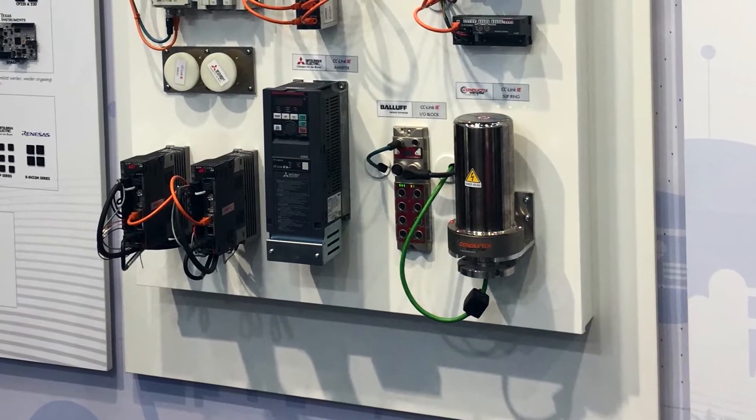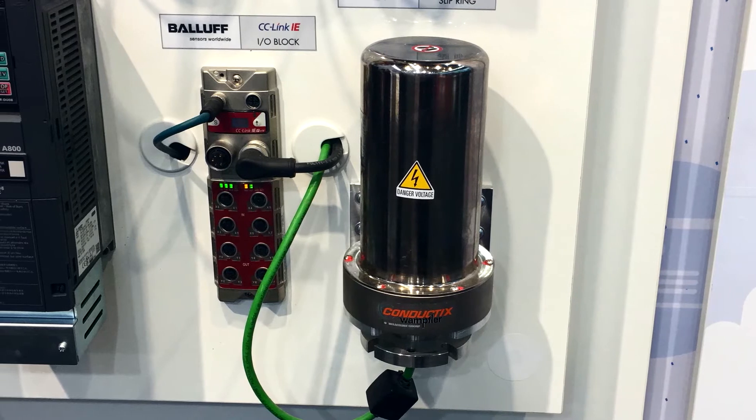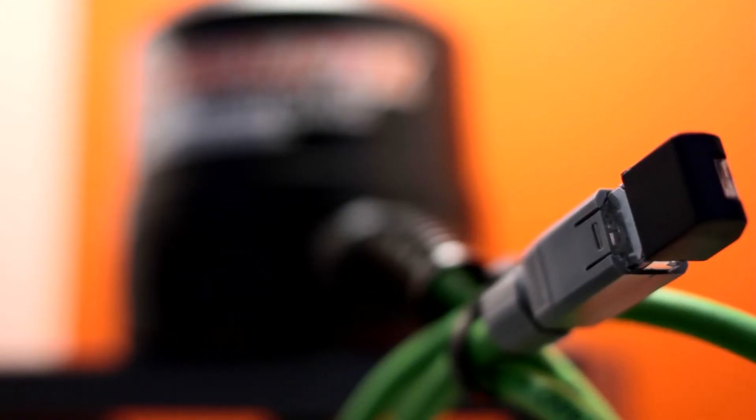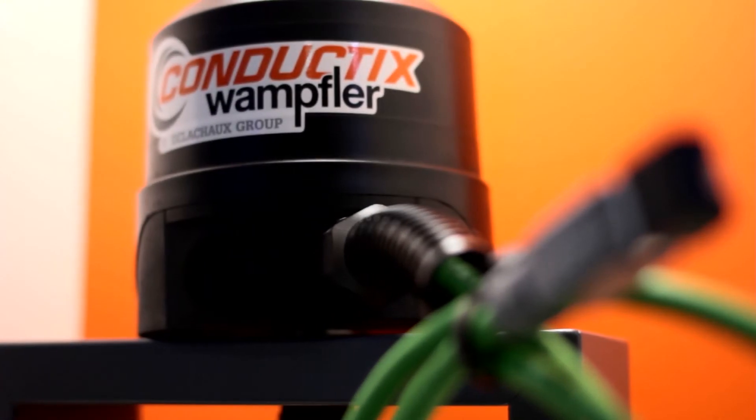A slip ring is an electromechanical device that allows continuous power and data transmission between a rotating and a stationary part. It is used in machines that need this kind of power or data transmission on the rotary part. It is used to improve machine performance or to allow an easier design of the machine itself.